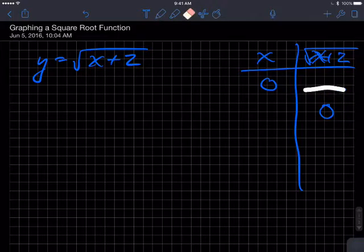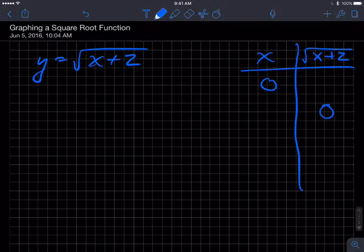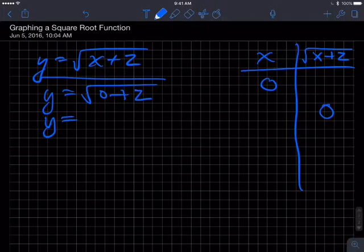So we should come up with, if I put a zero in for x, I'm going to get y equals the square root of zero plus two, which is equal to that.